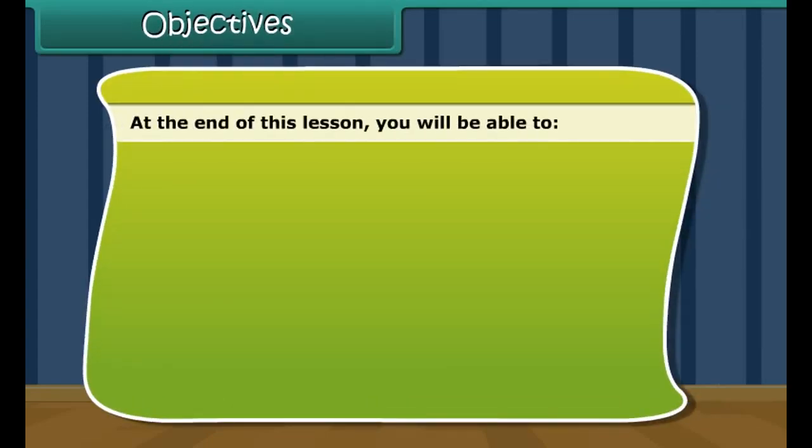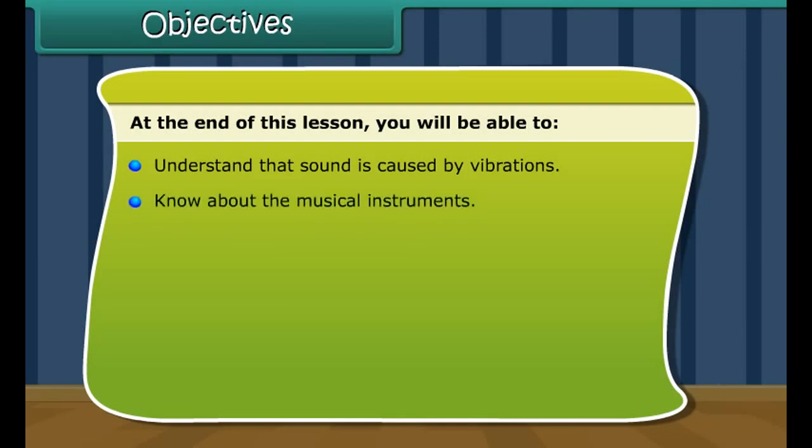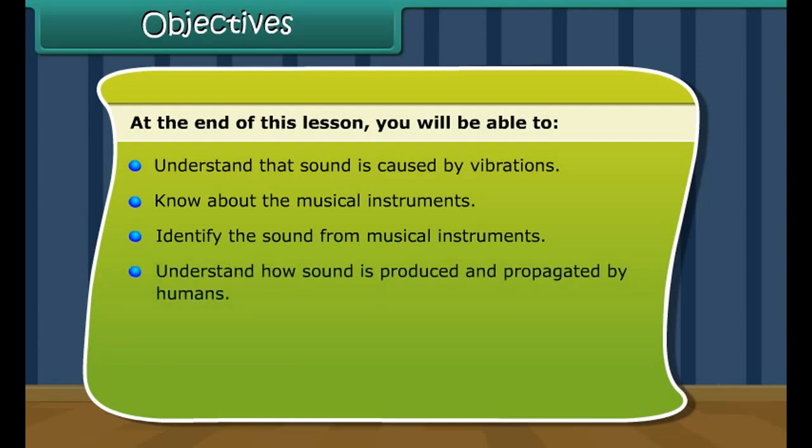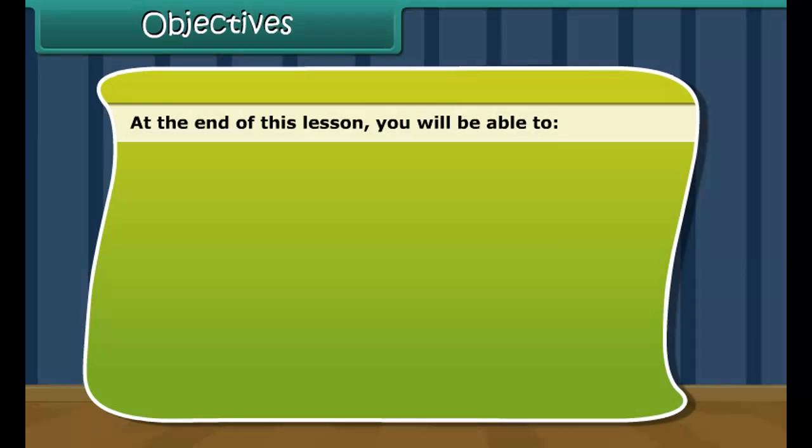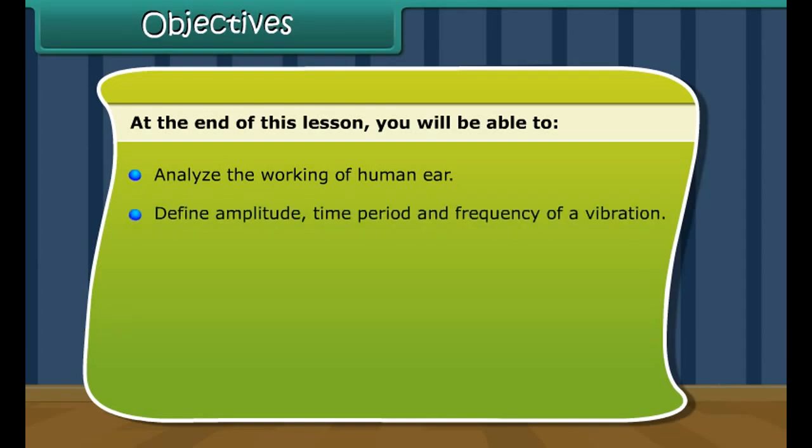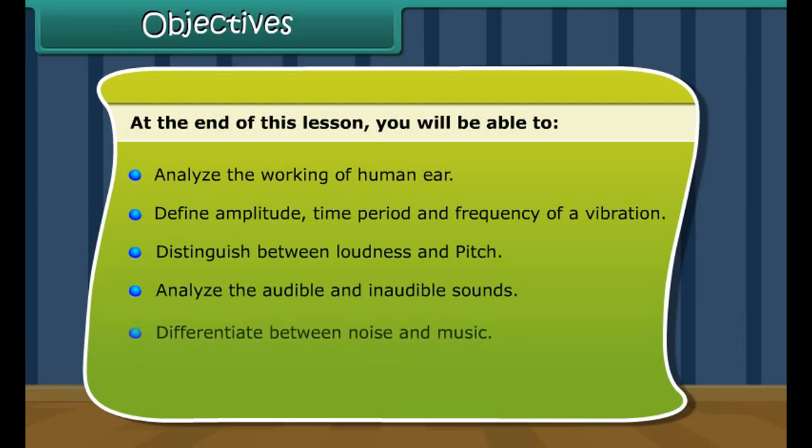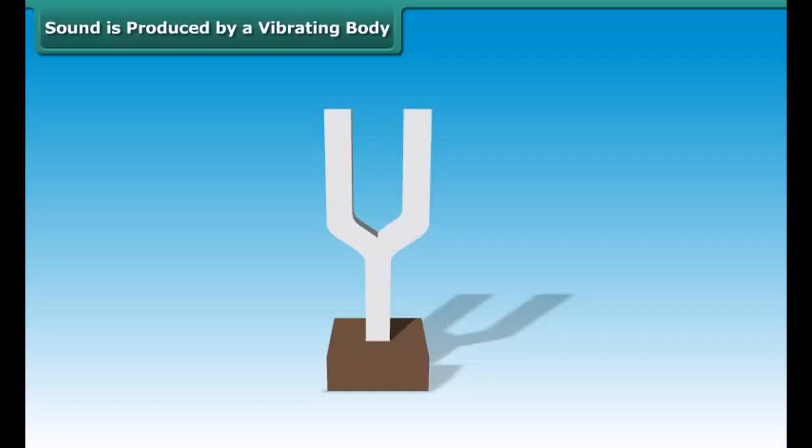Objectives. At the end of this lesson, you'll be able to understand that sound is caused by vibrations, know about musical instruments and identify their sounds, understand how sound is produced and propagated by humans, acquire knowledge that sound requires a medium for propagation, understand propagation in liquids and solids, analyze the working of the human ear, define amplitude, time period and frequency, distinguish between loudness and pitch, analyze audible and inaudible sounds, differentiate between noise and music, and understand noise pollution and its control measures.